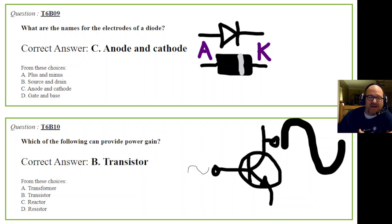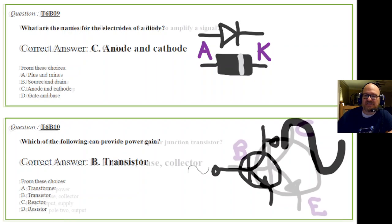Question 10: Which of the following can provide power gain? I drew a crude schematic of a transistor with a small signal coming in and a large signal coming out. The correct answer is transistor. Transformers don't provide power gain. A reactor makes electricity maybe. A resistor resists flow and might reduce power or turn it into heat. Out of these four choices, a transistor provides power gain.